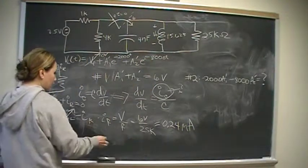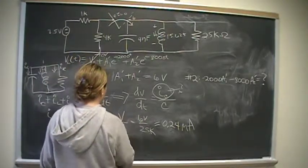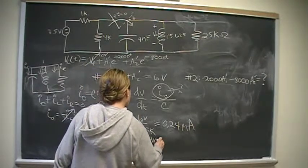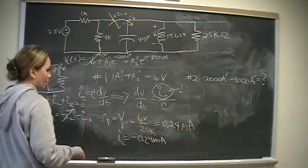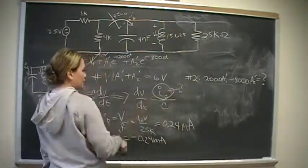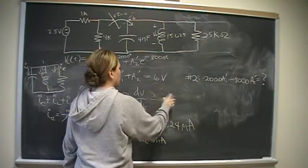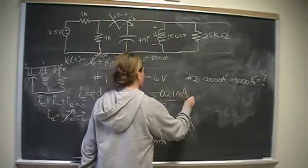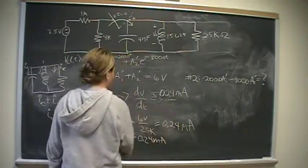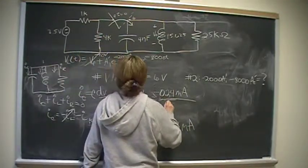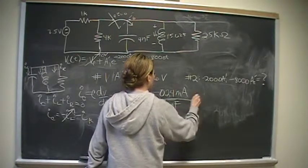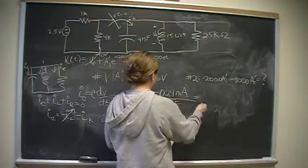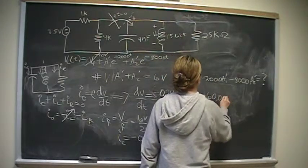I sub C is negative I sub R. Therefore, I sub C is equal to negative 0.24 milliamps. So now we have that. Plug it into that formula. We know this. This is negative 0.24 milliamps. We also know this, divided by 4 nanofarads. Put that into your calculator, and you should arrive at negative 60,000 volts per second.